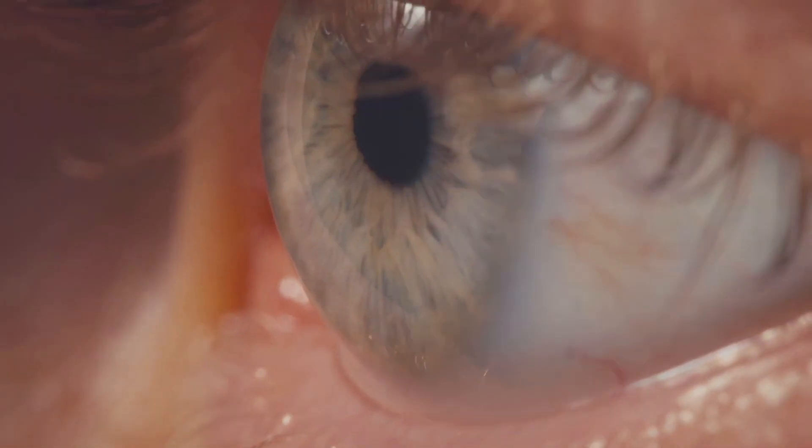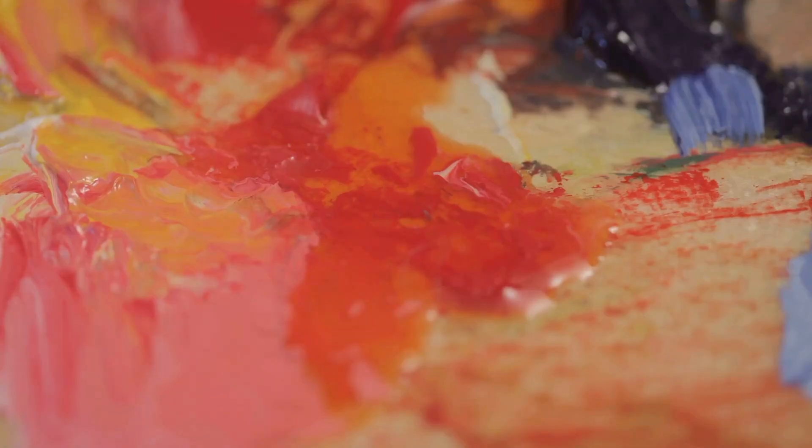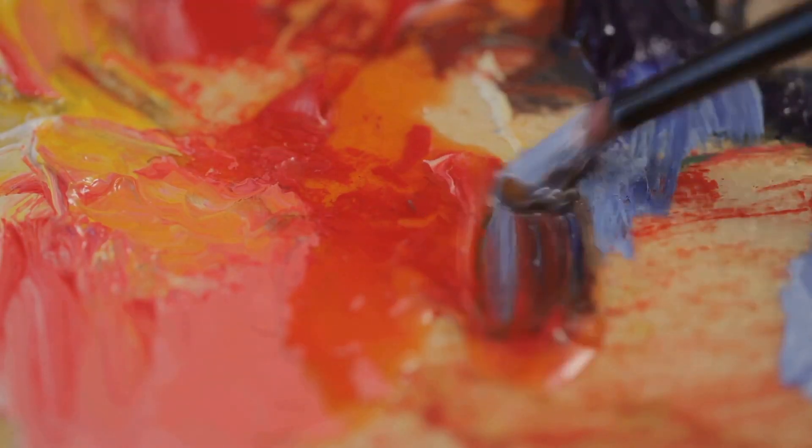Our eyes work like biological cameras, with specialized cells called cones acting as color detectors. We have three types of cones, each sensitive to a specific range of wavelengths: red, green and blue. These primary colors blend together much like an artist's palette to create the spectrum we perceive.